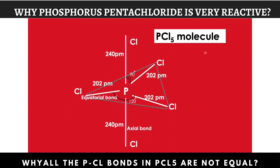PCl5 molecule has a trigonal bipyramidal structure. In the PCl5 molecule, we can see that 5 P–Cl bonds are present. These 5 P–Cl bonds are not equal in size. Among these 5, 3 P–Cl bonds have the same length — 202 picometers — and also the same angle. They form equatorial bonds.